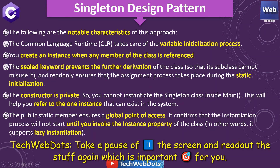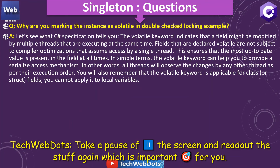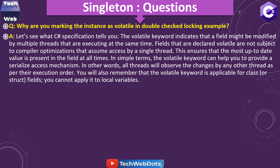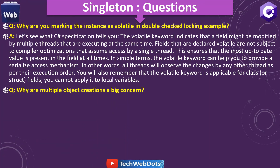Why do we make the instance volatile in the double-checked locking example? According to the C# specification, the volatile keyword indicates that a field might be modified by multiple threads executing at the same time. Fields declared volatile are not subject to compiler optimizations that assume single-thread access, ensuring the most up-to-date value is present in the field at all times. In simple terms, volatile provides a serialized access mechanism — all threads will observe changes made by any other thread as per the execution order. Note that volatile is applicable only to class or structure fields, not local variables.